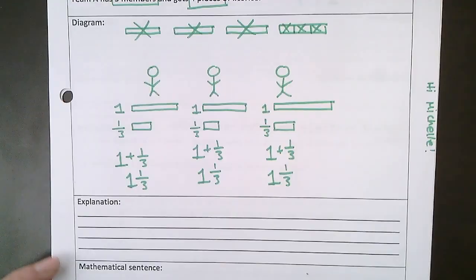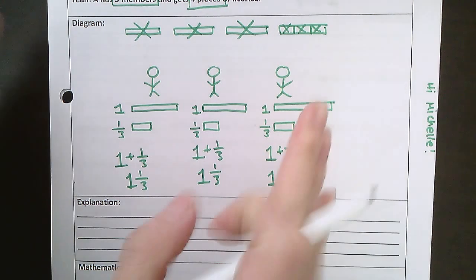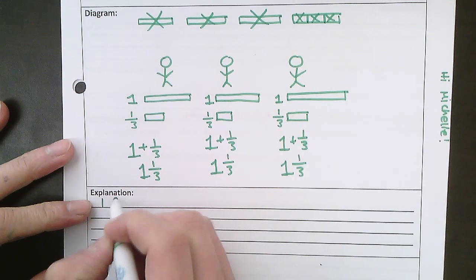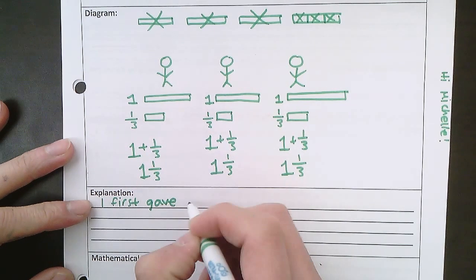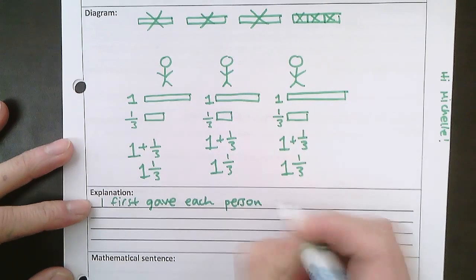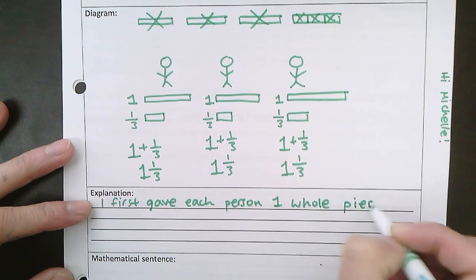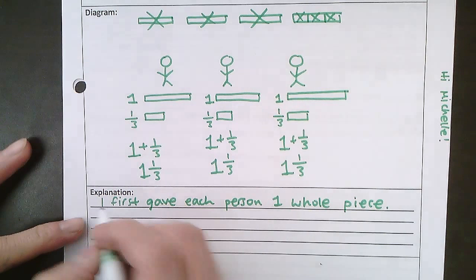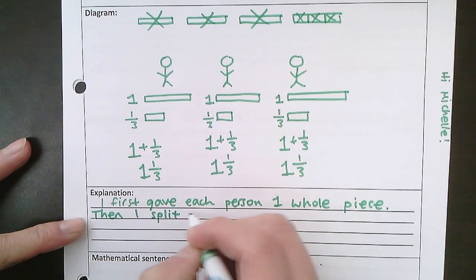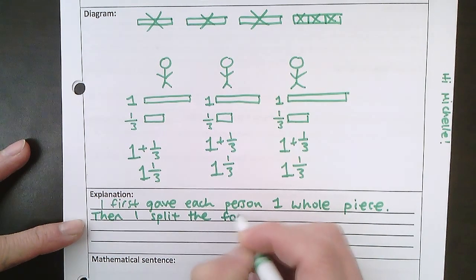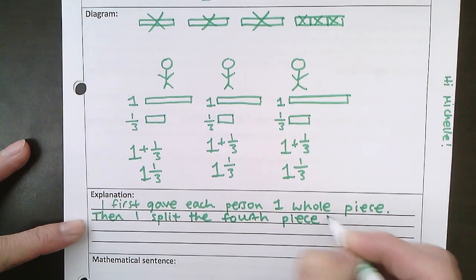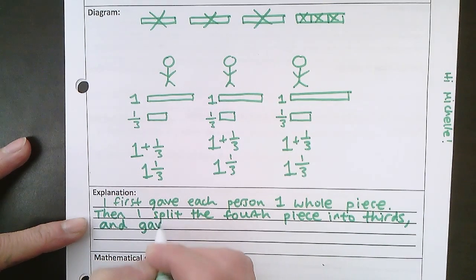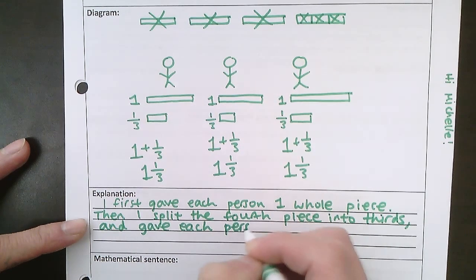Now for my explanation, I'm going to write out in words how I split up the four pieces of licorice to the three people. So if you remember, the first thing that we did was I first gave each person one whole piece. Then if you remember, what we did is we split the fourth piece into thirds and gave each person a third.